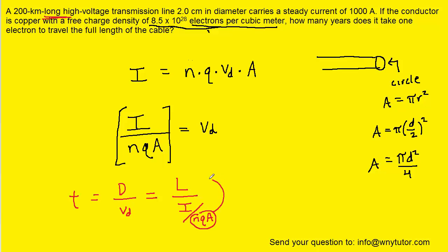Algebraically, the term NQA can move up to the numerator. And let's not forget we had developed an equation for area A of pi D squared over 4, so we'll substitute that in as well. Since we're dividing by 4, we can move the 4 to the denominator here.